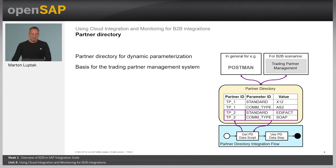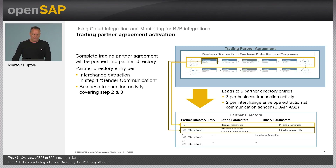The partner directory integration flow gets the PD data and provides parameters into the Camel header exchange properties, using the PD data to provide Camel header properties for further processing. The trading partner management activation holds the complete configuration maintained for a B2B scenario and pushes it into the partner directory, which serves as a repository and is an integrated part of integration suite and cloud integration.